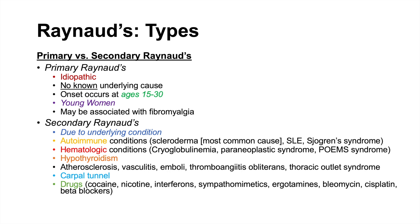Drugs are also a major category in the cause of secondary Raynaud's. These include cocaine, nicotine (smoking), interferons, sympathomimetics, ergotamines, bleomycin, and cisplatin — both chemotherapy drugs. Beta blockers can also cause secondary Raynaud's or exacerbate an underlying Raynaud's. Autoimmune hepatitis can also lead to secondary Raynaud's, and diabetes mellitus can exacerbate an underlying Raynaud's.